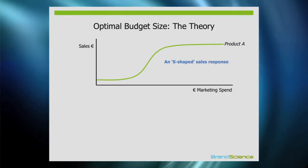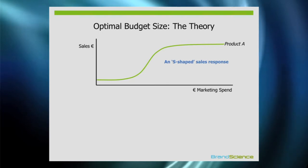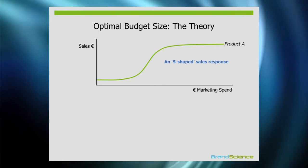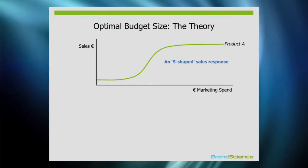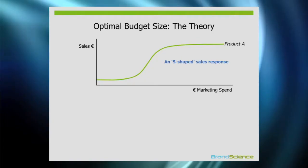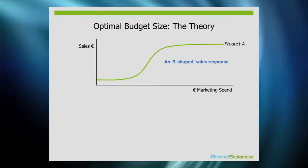How do we go about setting a marketing budget? The first thing to bear in mind is to think about how marketing is supposed to work on a big macro level. What I've got here is marketing spend on the x-axis and sales on the y-axis.